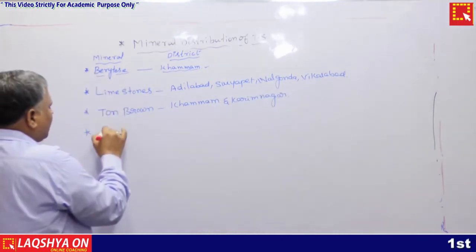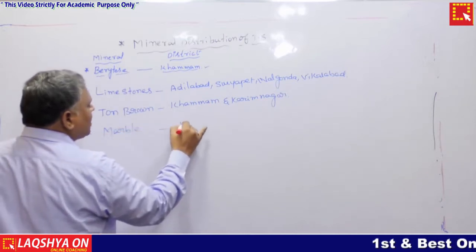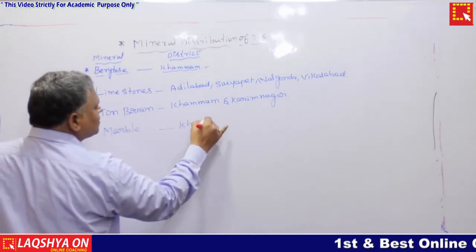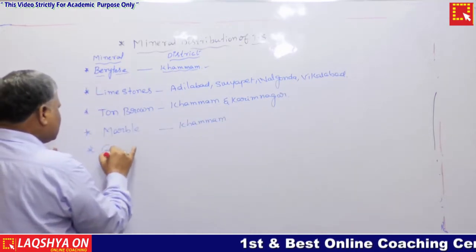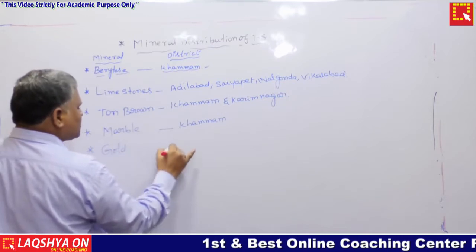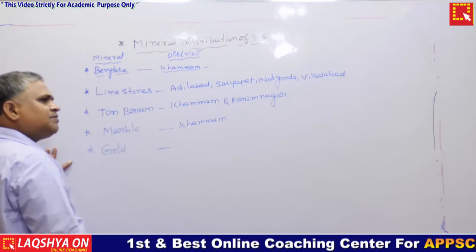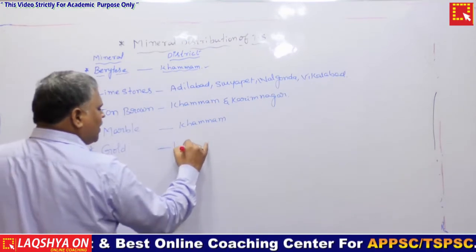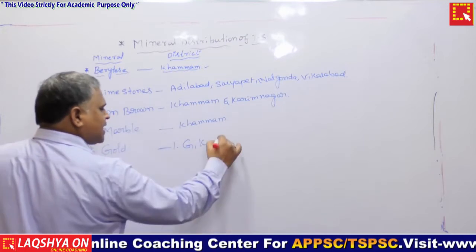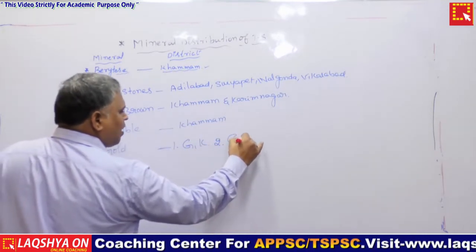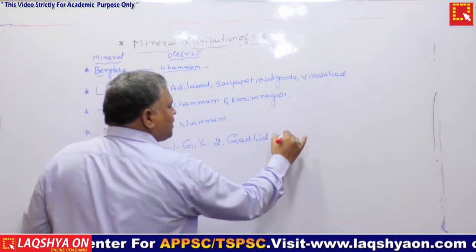Marble stone is sufficiently available in Kammam district. Gold reserves are available in Telangana state at the Godavari-Kinnarasani confluence place, Godwal, and Maddi Madugu.